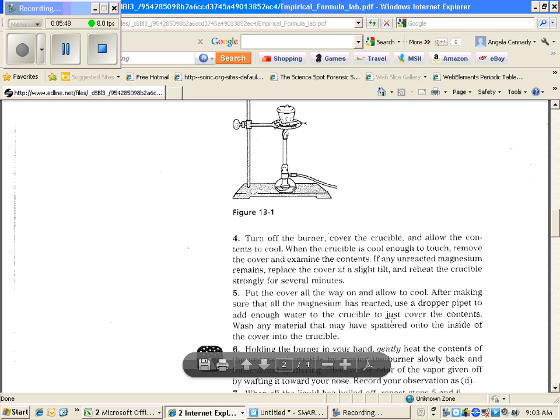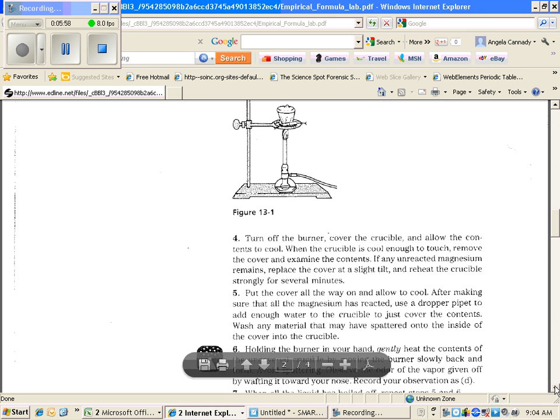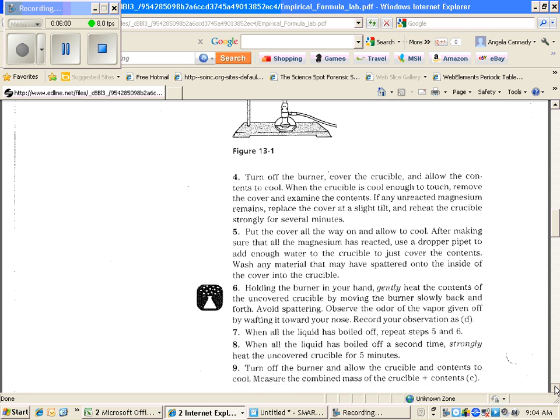Use a dropper and you're going to add water to just cover the contents. You don't want it drowning. You want it to just cover the contents. And you're going to basically wash down the sides of the crucible. After you do that, hold the burner in your hand.